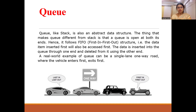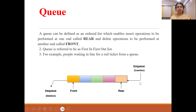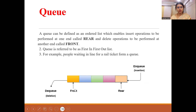Here is a real-time example: suppose there is a single-lane road — whichever vehicle enters first, exits first. This is the actual representation. In the Queue we use two pointers: the first pointer is known as the front pointer and the second one is known as the rear pointer. We insert data from the rear side and remove data from the front side.